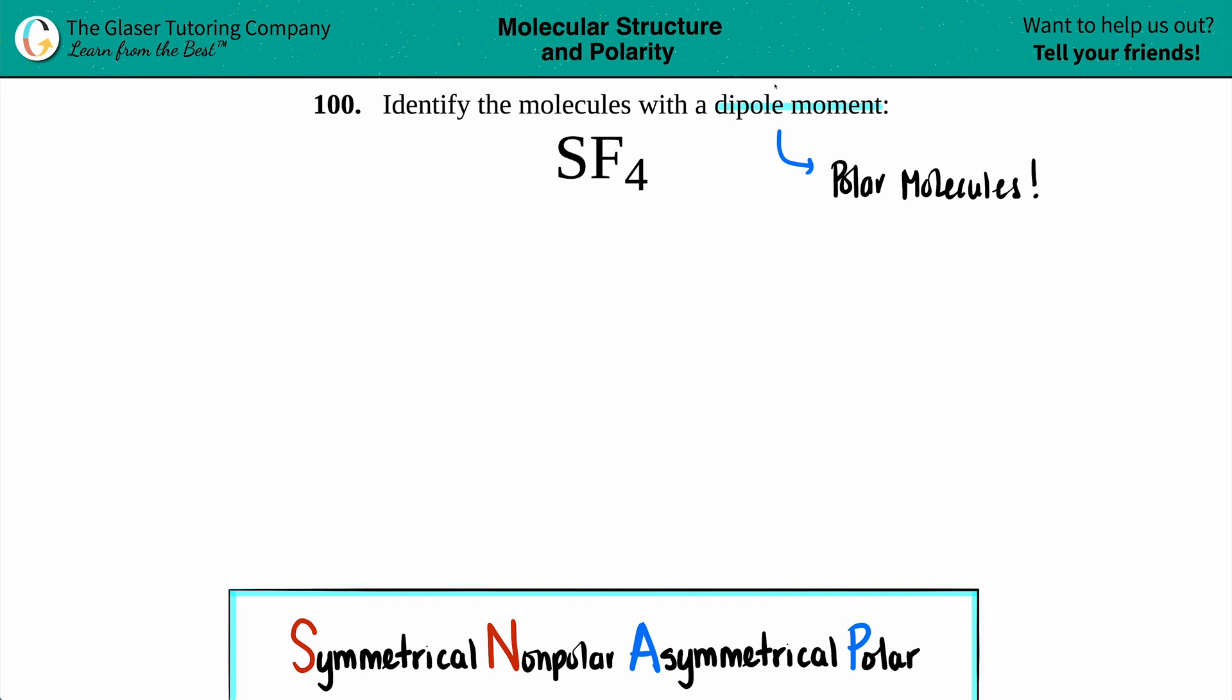But I want to see those bonds. But if I just look at SF4, I can't really see the bonds. So with these types of questions, especially if they ask for a dipole moment, just take a second and draw the Lewis structure. Even though it is one extra step, I promise you that by visualizing and seeing what these molecules actually look like in terms of Lewis structure, you'll be able to answer a lot of questions.